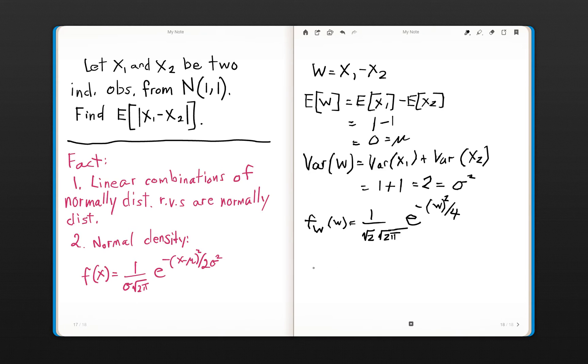So really, what we're wanting to do then is to compute this expected value here. That's the same, based on our transformation, as finding the expected value of the absolute value of W, which is equal to, I'm going to write out the full integration. It looks like this, but we're going to use our new density here. This f(W), and I'm not going to write it all out again because it's already written right here for you, but we can write the absolute value of W times the associated density.